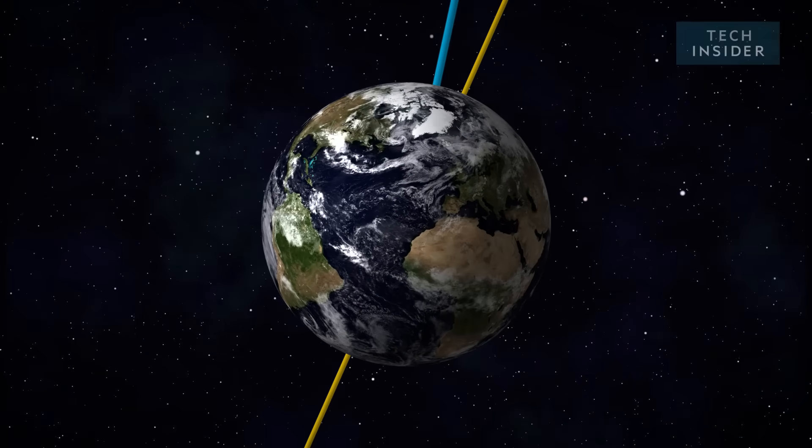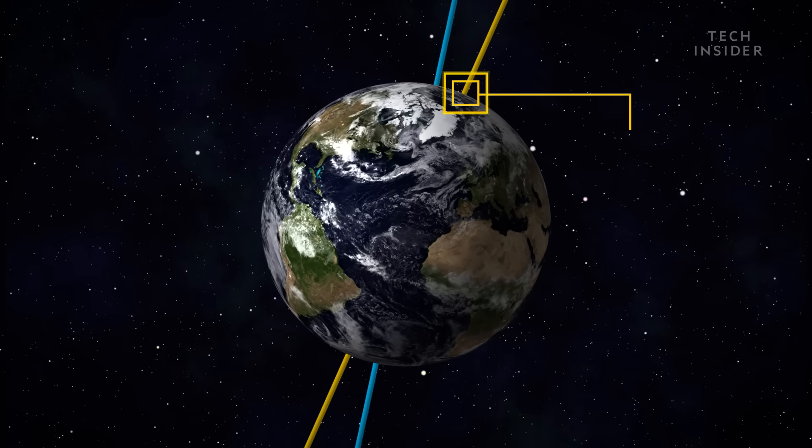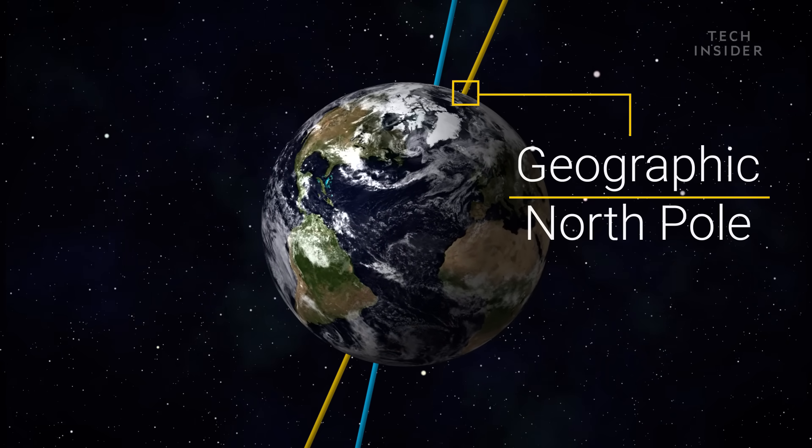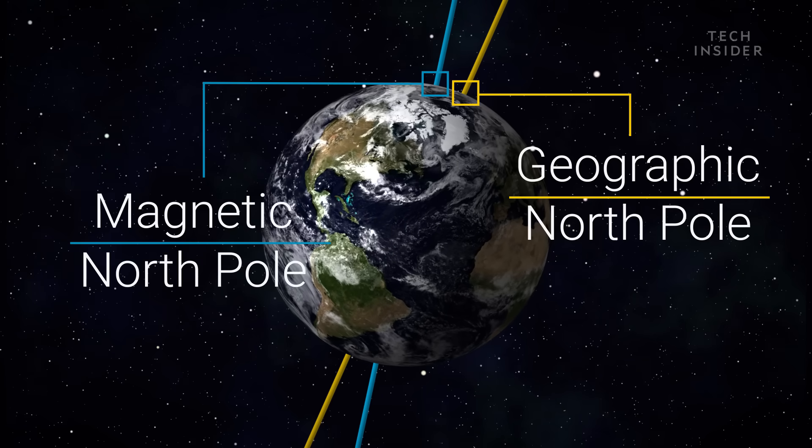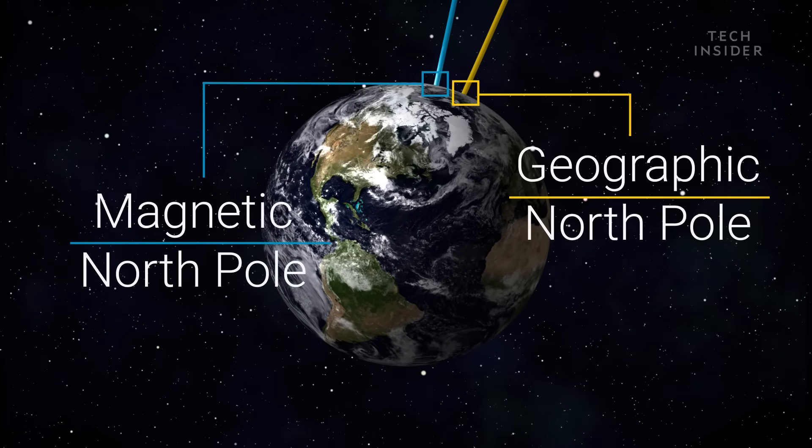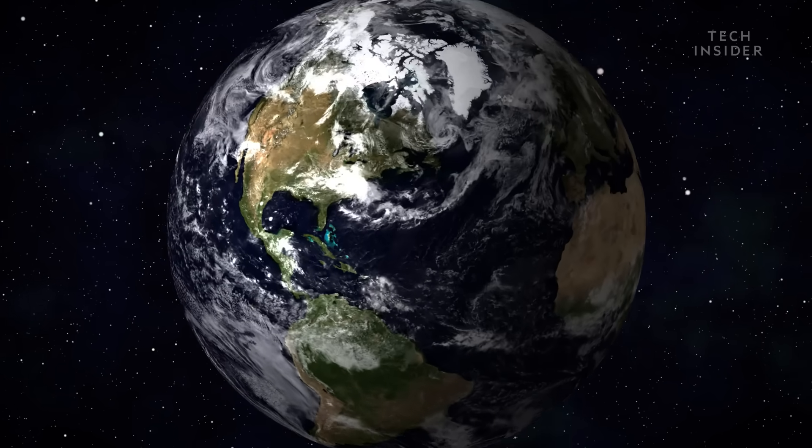Did you know that Earth has two North Poles? There's the geographic North Pole, which never changes, and there's the magnetic North Pole, which is always on the move. And right now, it's moving faster than usual.